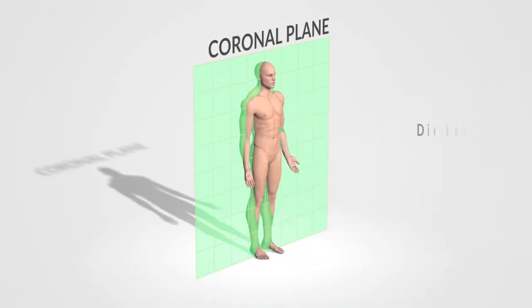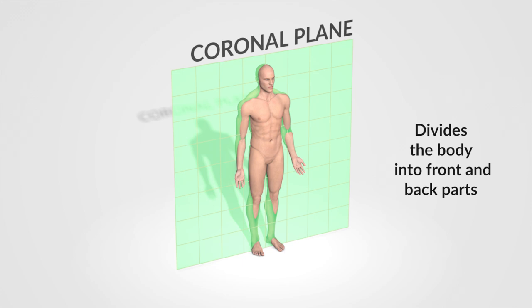The coronal or frontal plane is also a vertical plane but divides the body into front and back parts.